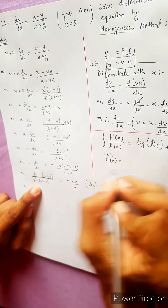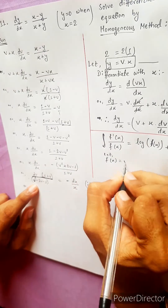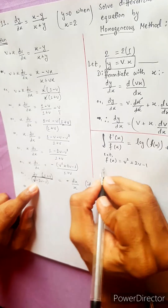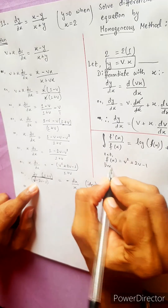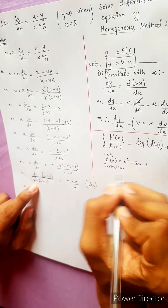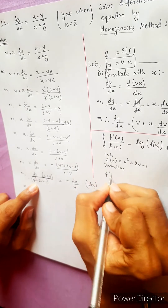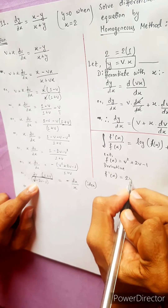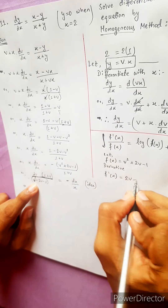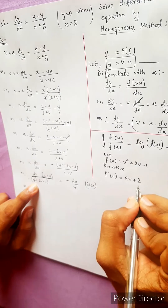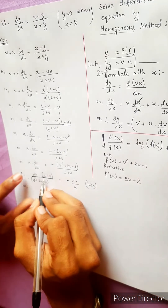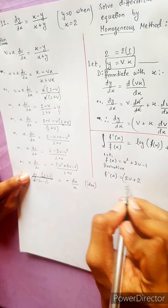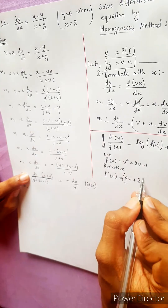Let f(v) equal the denominator v² plus 2v minus 1. We compute f'(v), the derivative: f'(v) equals 2v plus 2. We will use the formula for integration of f'(x)/f(x).